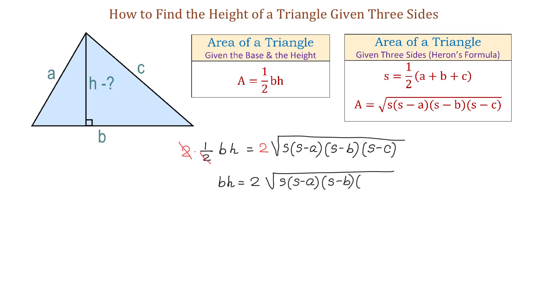Next, we will divide both sides by b, giving us h equals 2 times square root of s(s - a)(s - b)(s - c) all divided by b, where s is one-half of a plus b plus c.